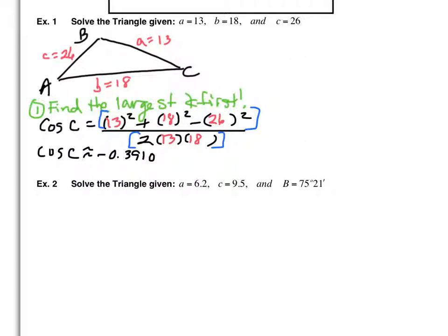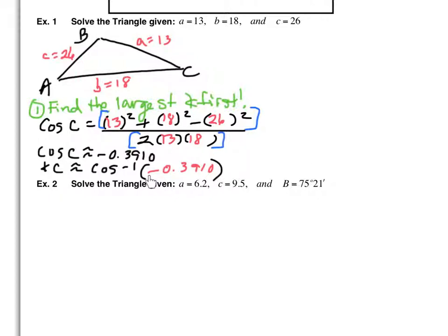We really don't want cosine of C — we want angle C. So we take the inverse cosine (arc cosine). But we don't put in the rounded value; we use the entire decimal stored in the calculator. To get that, use second answer (second + the negative key, which shows ANS). Hit second cosine to get inverse cosine, and it automatically gives you parentheses. Then hit second negative to get your answer in there.